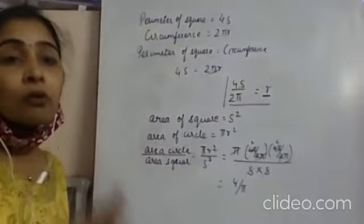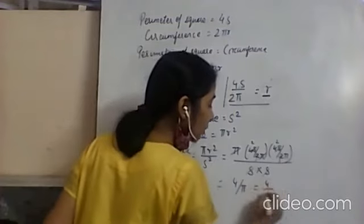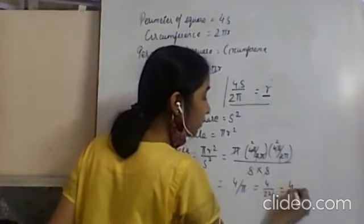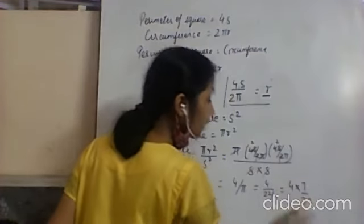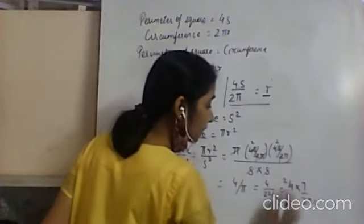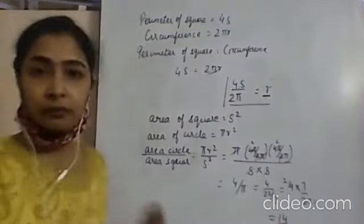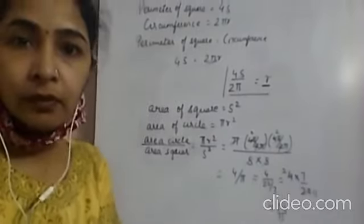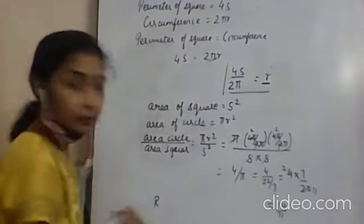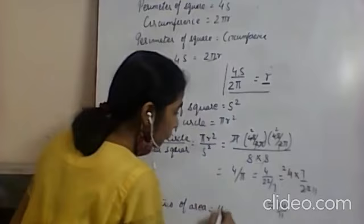So the ratio is 4 upon π. Substituting π equals 22/7: 4 upon (22/7) equals 4 into 7 upon 22 equals 28 upon 22. Simplifying: 2 into 7 upon 2 into 11 gives 14 upon 11. So the ratio of the areas is 14 : 11.